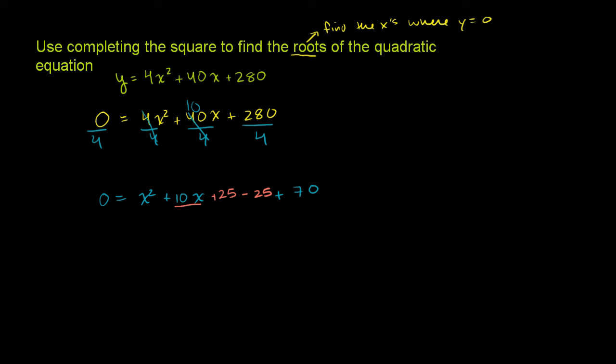But what I have done is I've made it possible to express these three terms as a perfect square. That right there, 2 times 5 is 10. 5 squared is 25. So that is x plus 5 squared. And if you don't believe me, multiply it out. You're going to have x squared plus 5x plus 5x, which will give you 10x, plus 5 squared, which is 25.